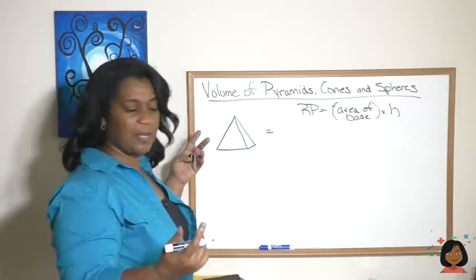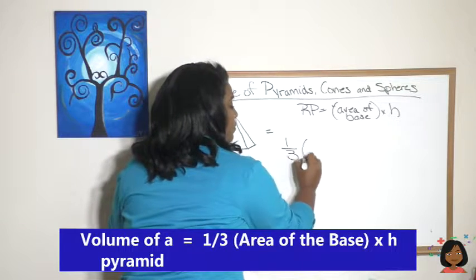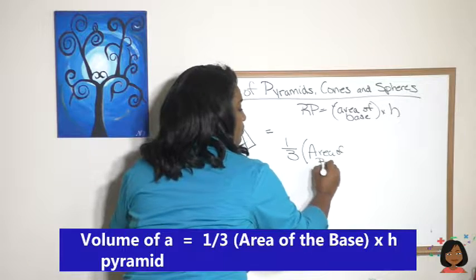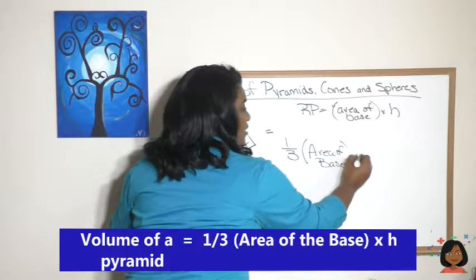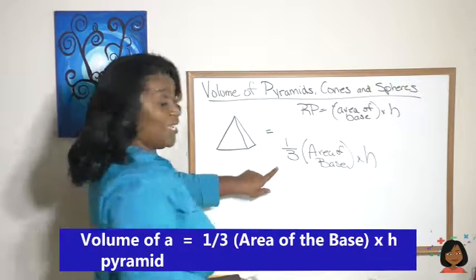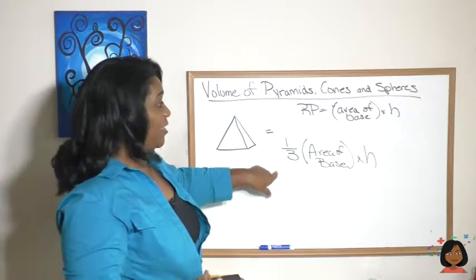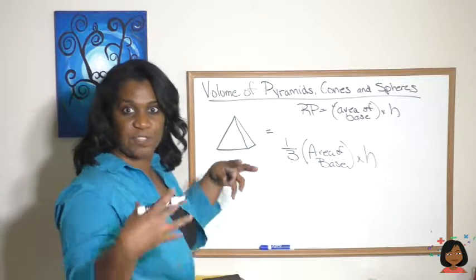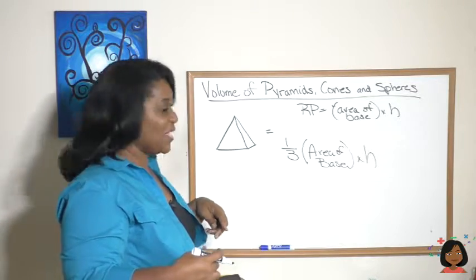In real language, that just means the formula for our pyramid is one-third the area of the base times the height. It's one-third the formula of the rectangular prism. So I guess if you had a rectangular prism you could put three pyramids inside of it.